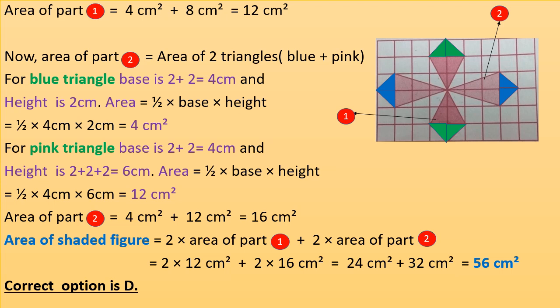Now the area of the shaded figure equals 2 times area of part one plus 2 times area of part two, which is 2 times 12 cm squared plus 2 times 16 cm squared equals 24 cm squared plus 32 cm squared equals 56 cm squared. The correct option is D.